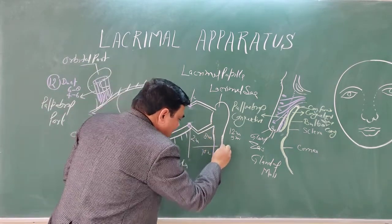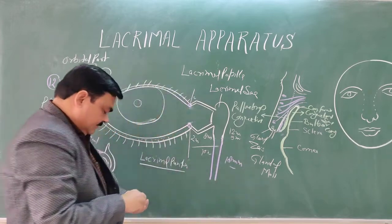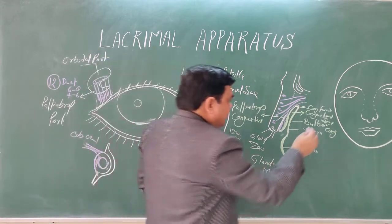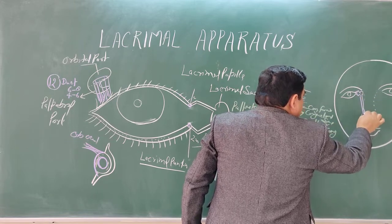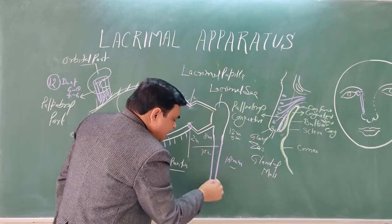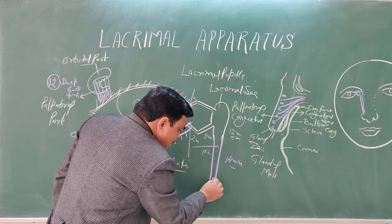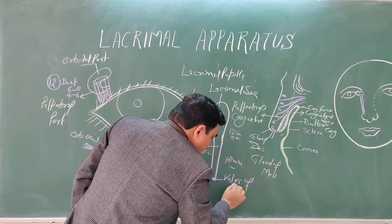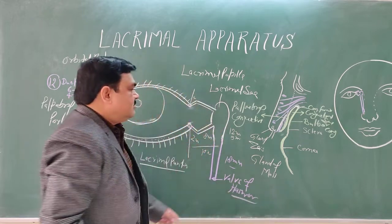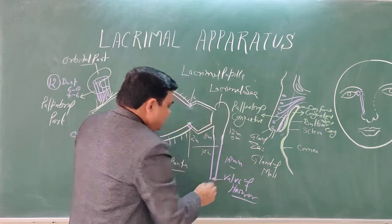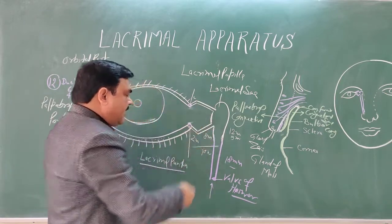The nasolacrimal duct is about 18 millimeters in length. It opens into the inferior concha — specifically into the inferior meatus, which is the space below the inferior concha. Here there is a valve of the mucosa known as the valve of Hasner, which guards the opening and prevents air from going back into the nasolacrimal duct.